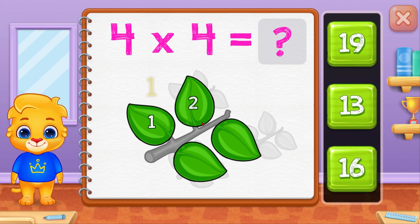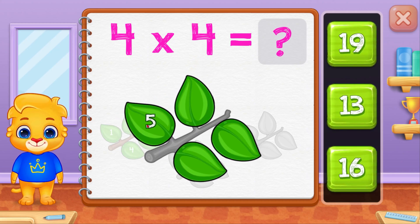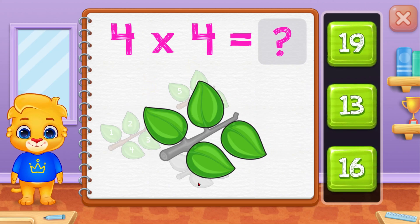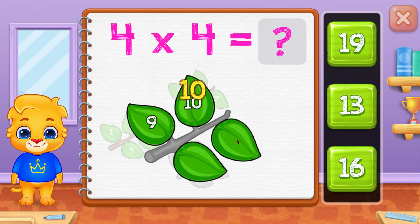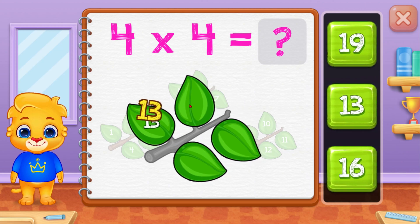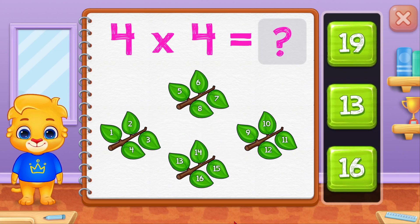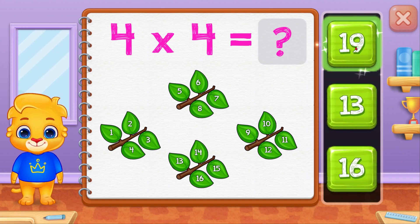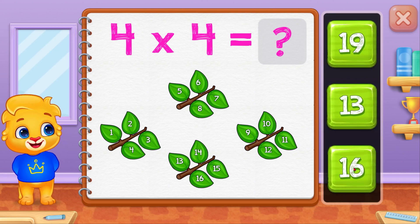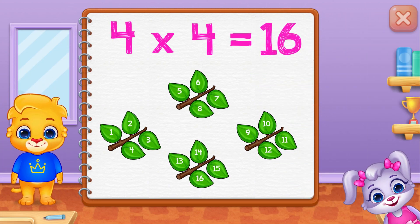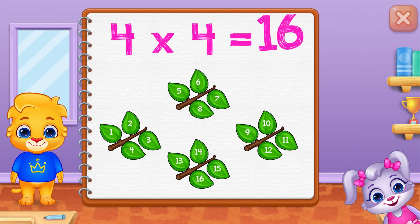1, 2, 3, 4, 5, 6, 7, 8, 9, 10, 11, 12, 13, 14, 15, 16. 4 times 4 equals 16.